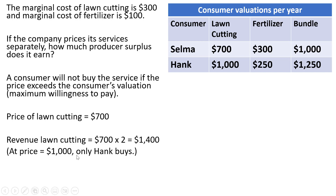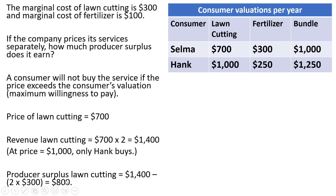Notice if the company set a price of, say, $1,000, the revenue would be less from lawn cutting. At a price of $1,000, only Hank would buy lawn cutting — Selma's not going to pay $1,000 for something she values at most at $700. So revenue would be lower at a price of $1,000. In terms of producer surplus from lawn cutting, we have $1,400 in revenue and we're going to subtract out the marginal cost, which is 2 times $300. We're cutting two people's lawns, so 2 times 300 is $600.